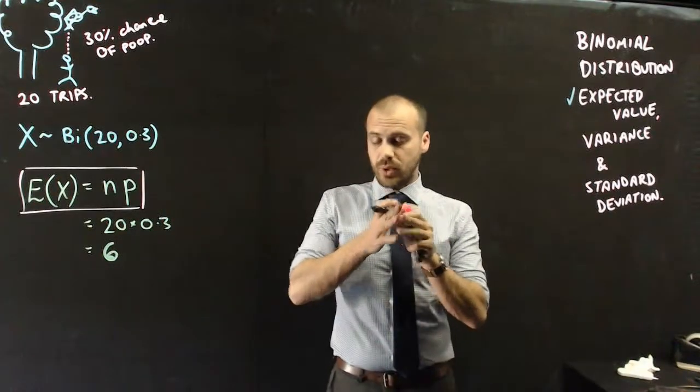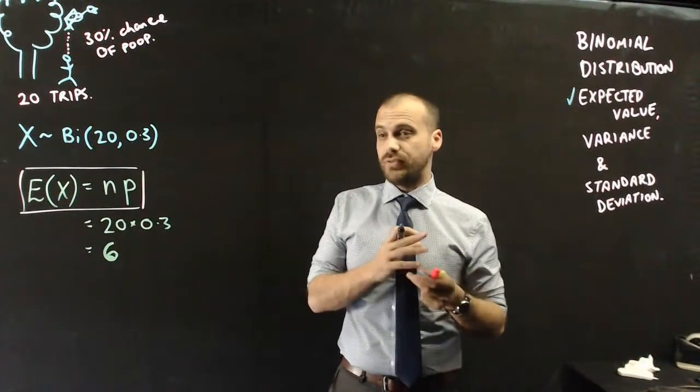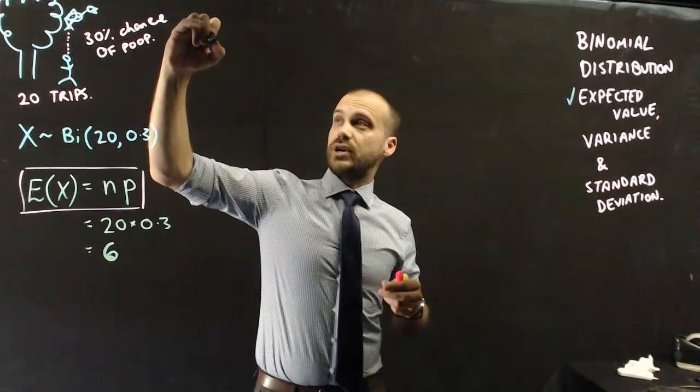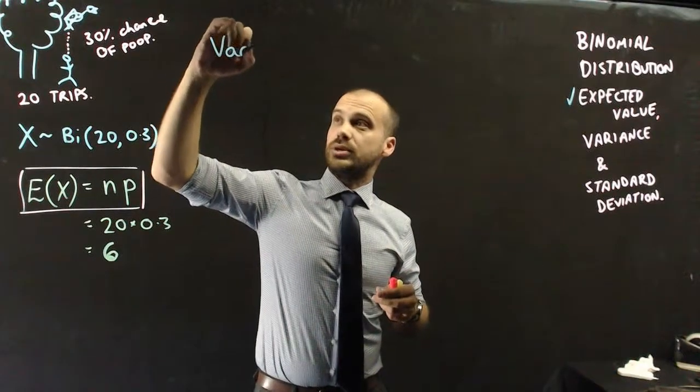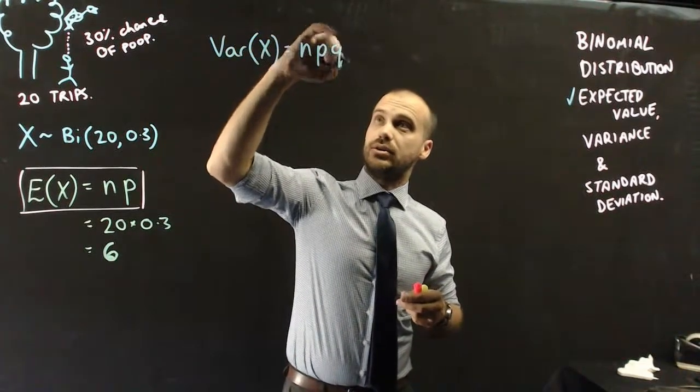Now, how spread out is that data going to be? Variance is a measure of that spread, how spread out the data is. So, the formula for variance, that's going to be, it's pretty straightforward as well. We write Var(X) = NPQ.